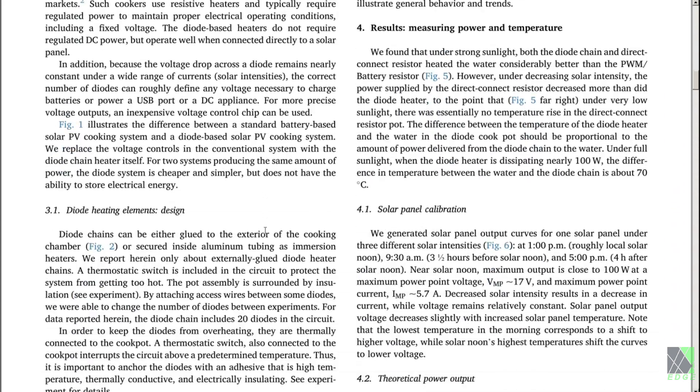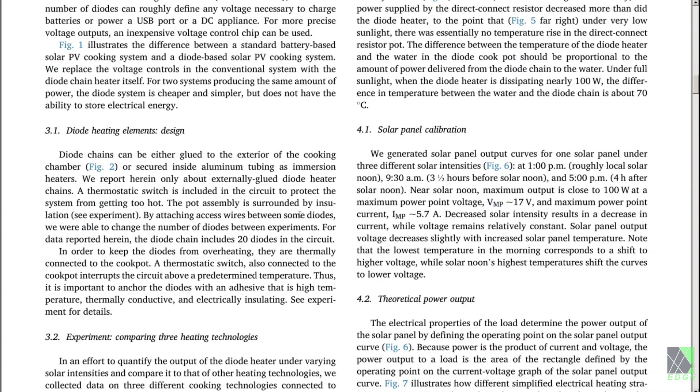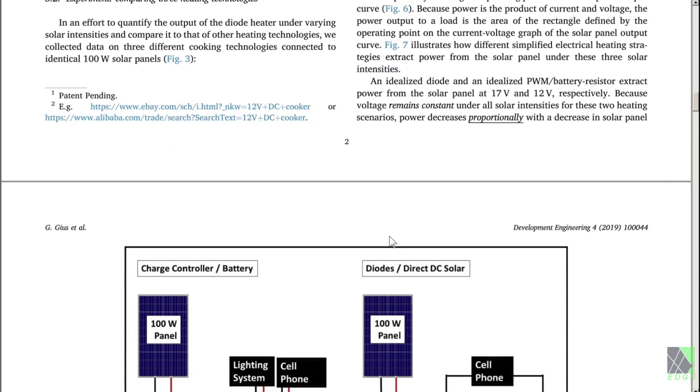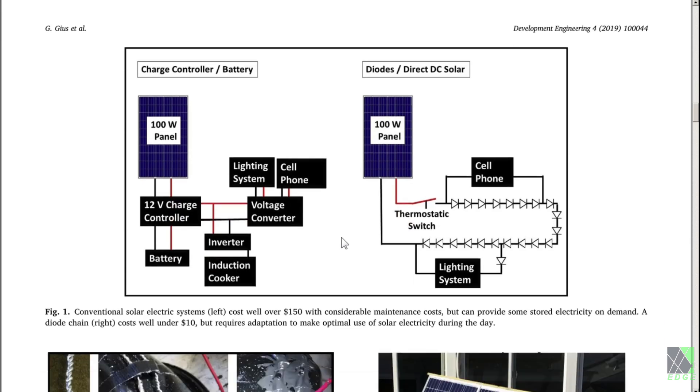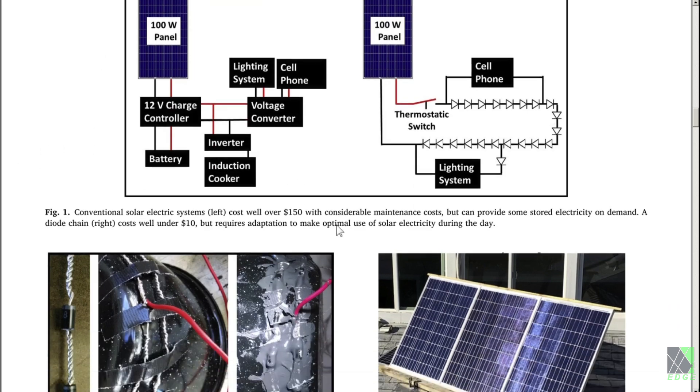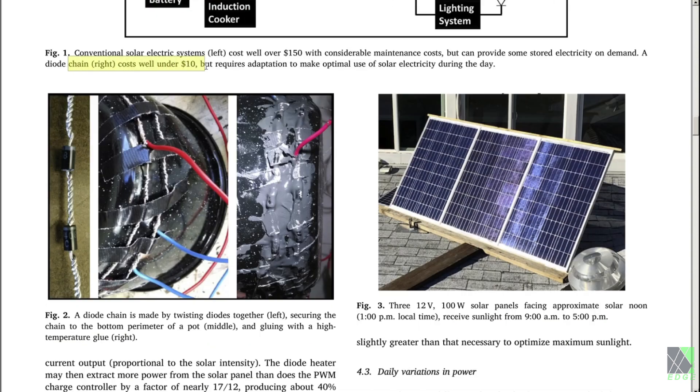They did a really good job. It's not really that hard of a paper to read. It's actually very straightforward. I like the way it's laid out. They're going to go through a lot of details to set up the experiments they did, how they calibrate the solar panels, theoretical power output, things like that. Here's their setup. You can see right away that they're showing it as a power supply for charging a cell phone or running lighting. They're comparing it on the left with a traditional off-grid system that has a battery, charge controller, and all that good stuff, and an induction cooker in this case. A diode chain costs well under $10, but you have to know how to use it.